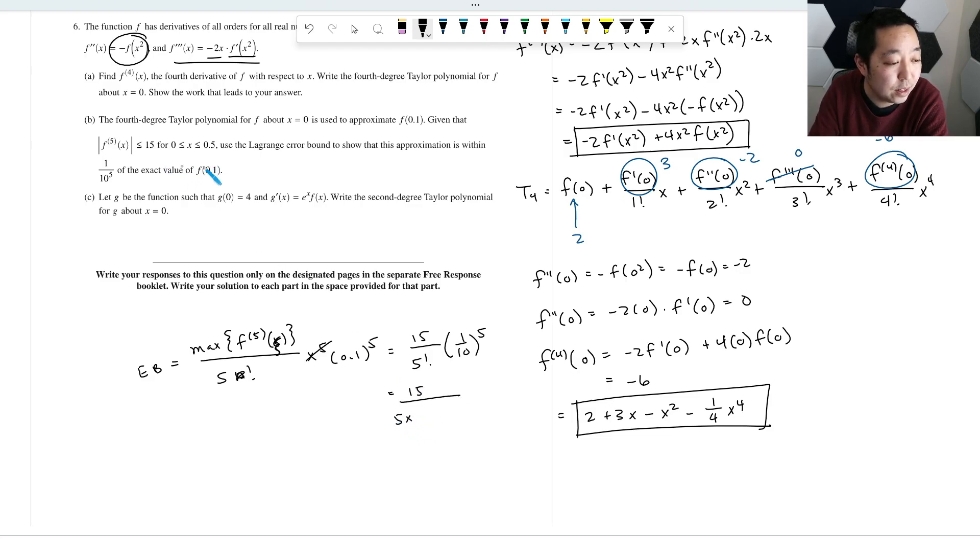So this is sufficient. We could say that this is equal to 15/(5!) times (1/10)⁵. So that's 15 over... I guess you could just show that this thing is less than 1. So 15/(5!) is less than 1. Therefore, 15/(5!) times (1/10)⁵ is definitely less than 1/(10⁵), without doing the computation. And that is the Lagrange error bound. I don't know exactly how picky they're going to be on your setup, but that's what I would include as the Lagrange error bound.